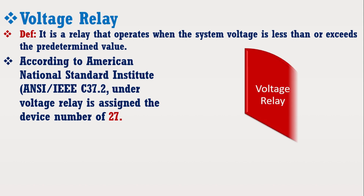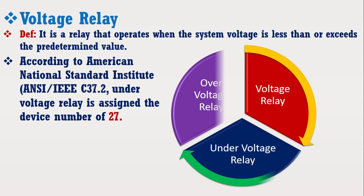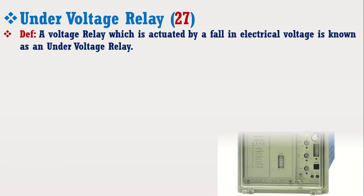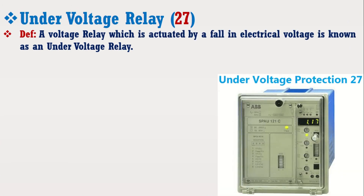Voltage relay has two types known as undervoltage relay and overvoltage relay. A voltage relay which is actuated by a fall in electrical voltage is known as an undervoltage relay.